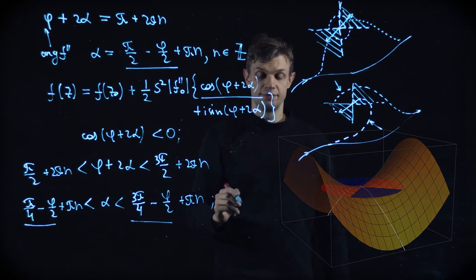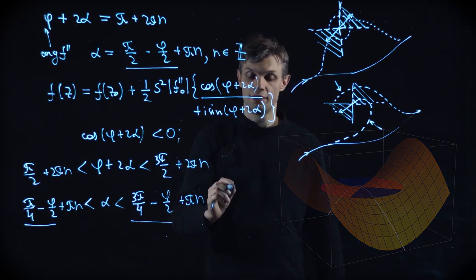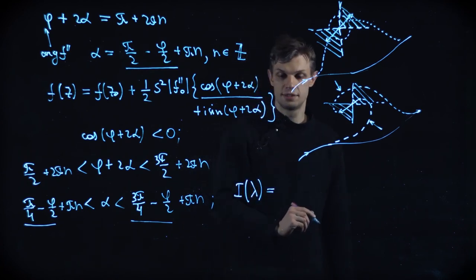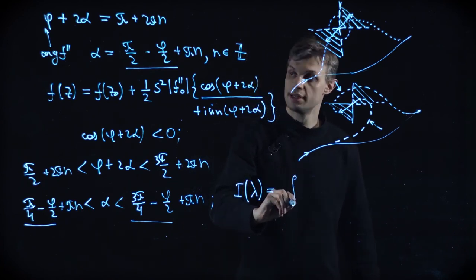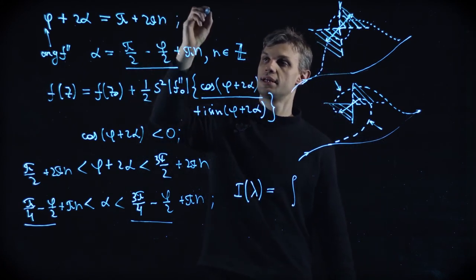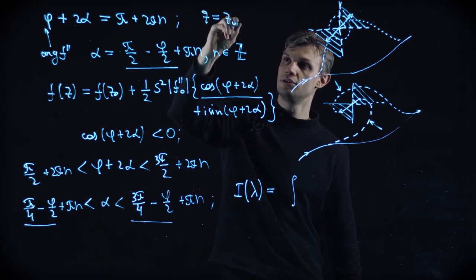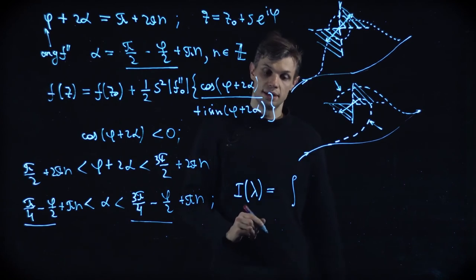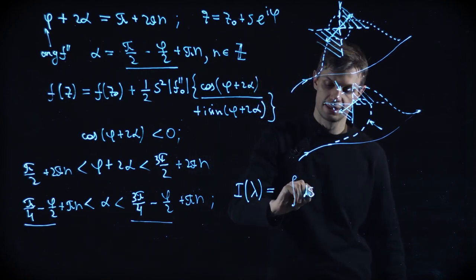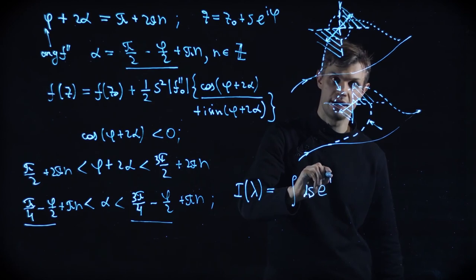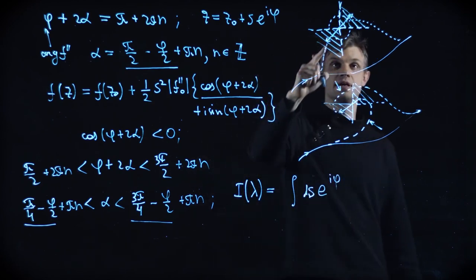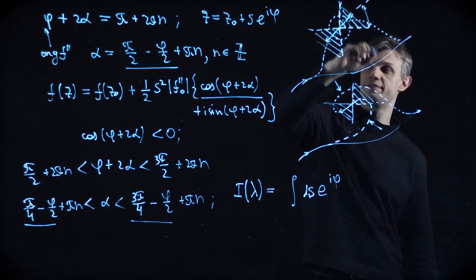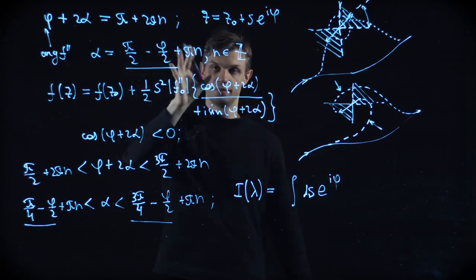And finally, we are ready to write down the answer for our estimate. So I of lambda now is equal to the integral. So we made this parameterization. Now z, as you remember, is equal to z0 plus s times e to i alpha. So dz is equal to ds times e to i alpha. As usual, we substitute this curved contour with a straight line with the slope alpha, which is defined by the steepest descent direction.